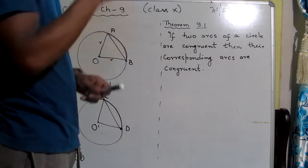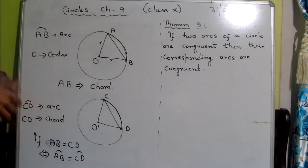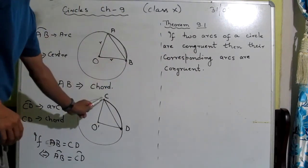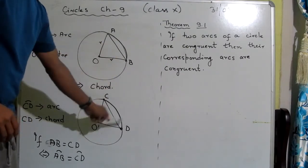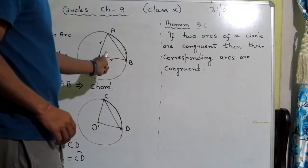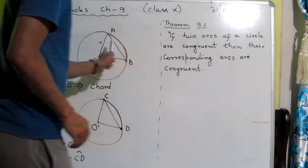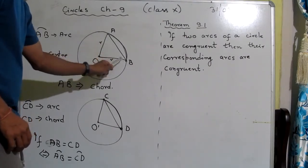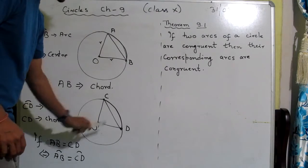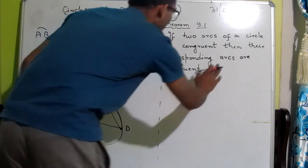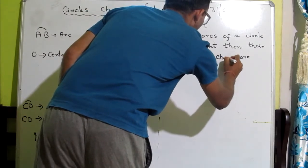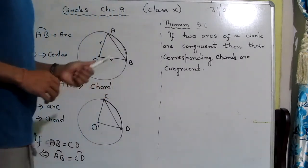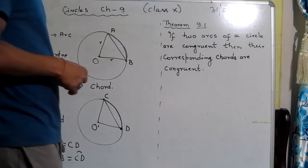This is Theorem 1. If two arcs of a circle are congruent — this arc and this arc are congruent, meaning exactly the same — then their corresponding chords are also congruent. Now let us prove this theorem, so that in every other exercise we are going to use it.